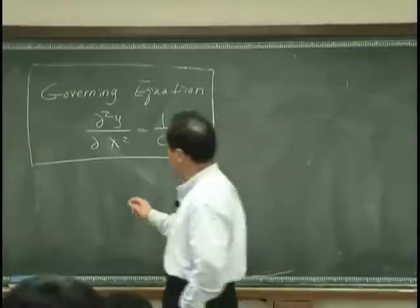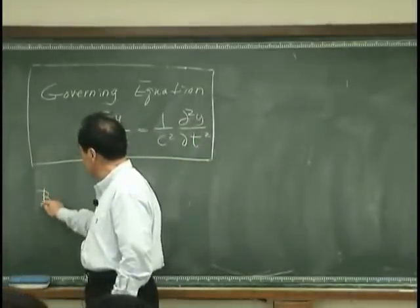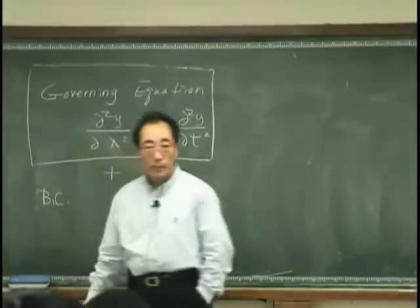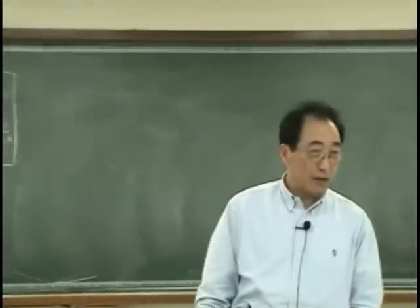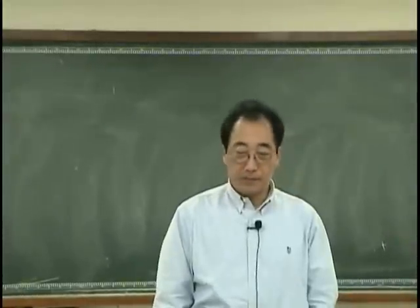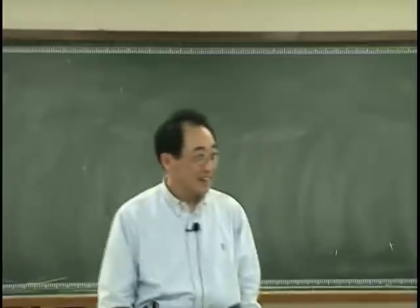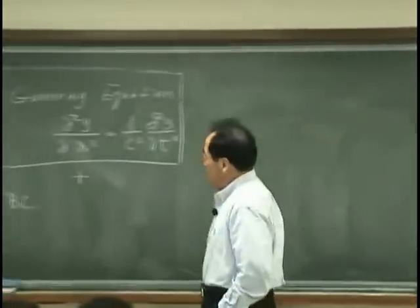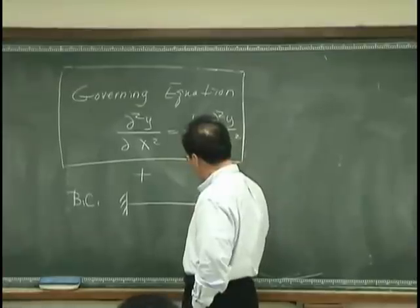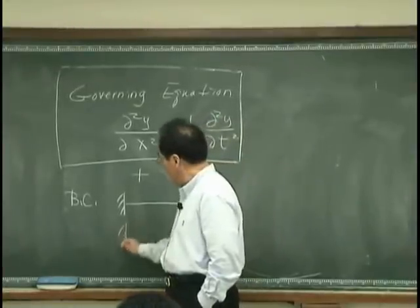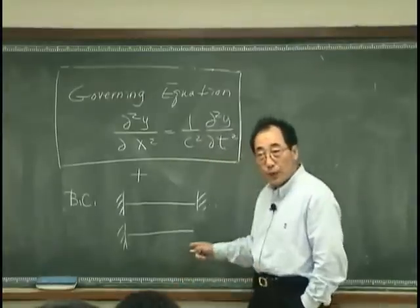And boundary condition. BC does not stand for before century, don't confuse it, boundary condition. For example, fixed boundary condition or free boundary condition, how to express a free boundary condition?